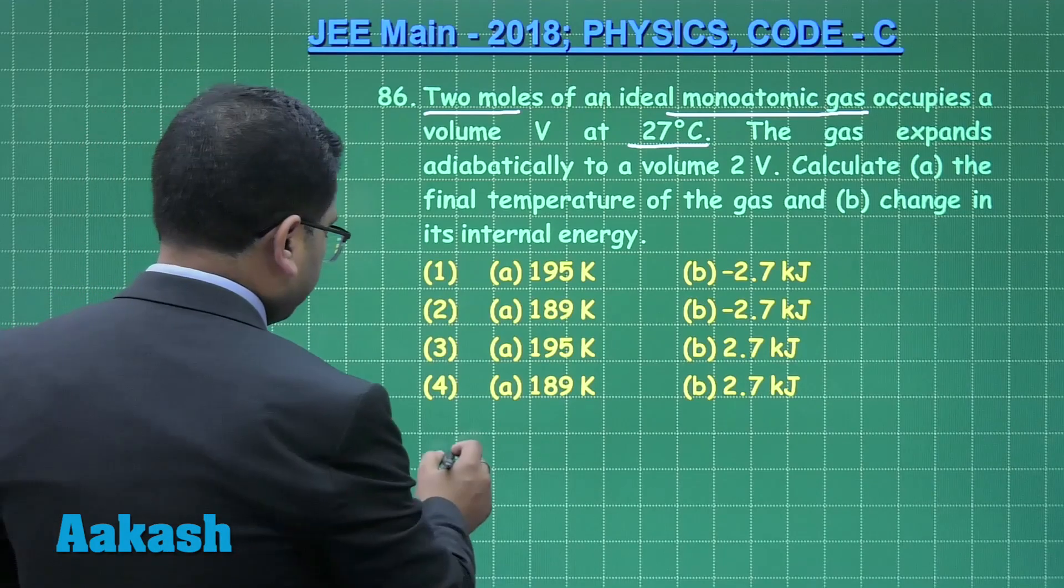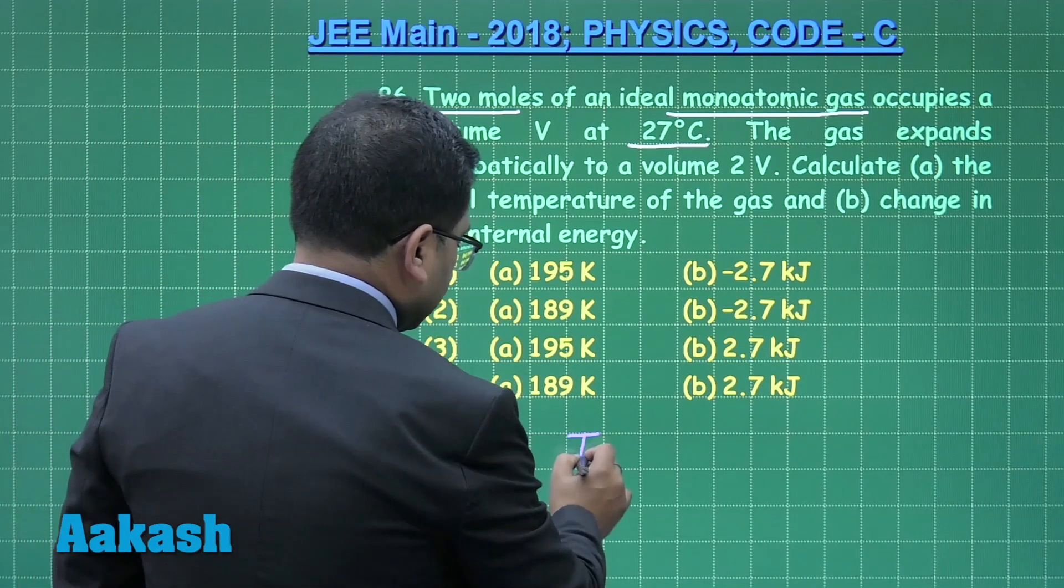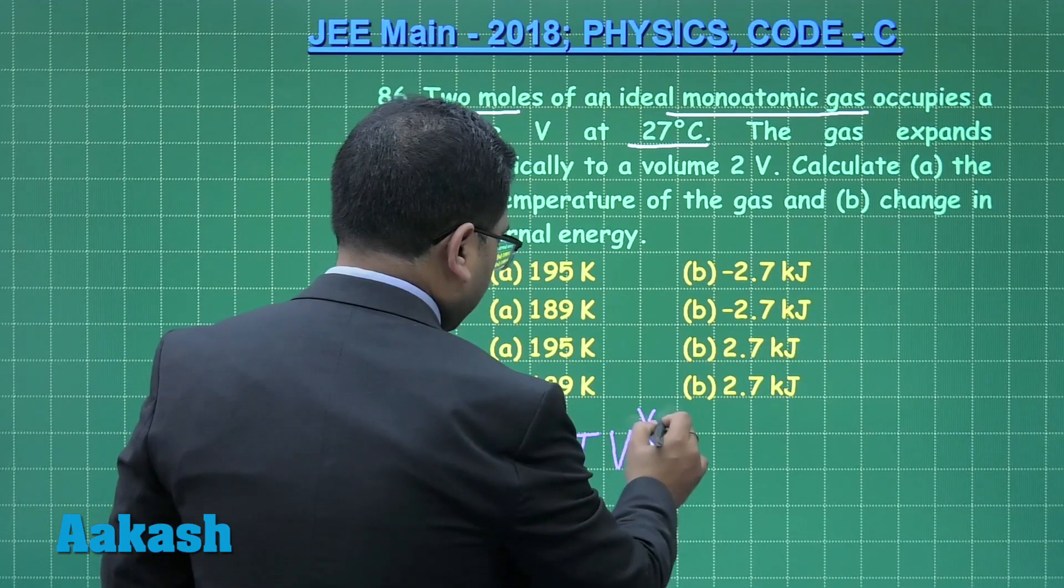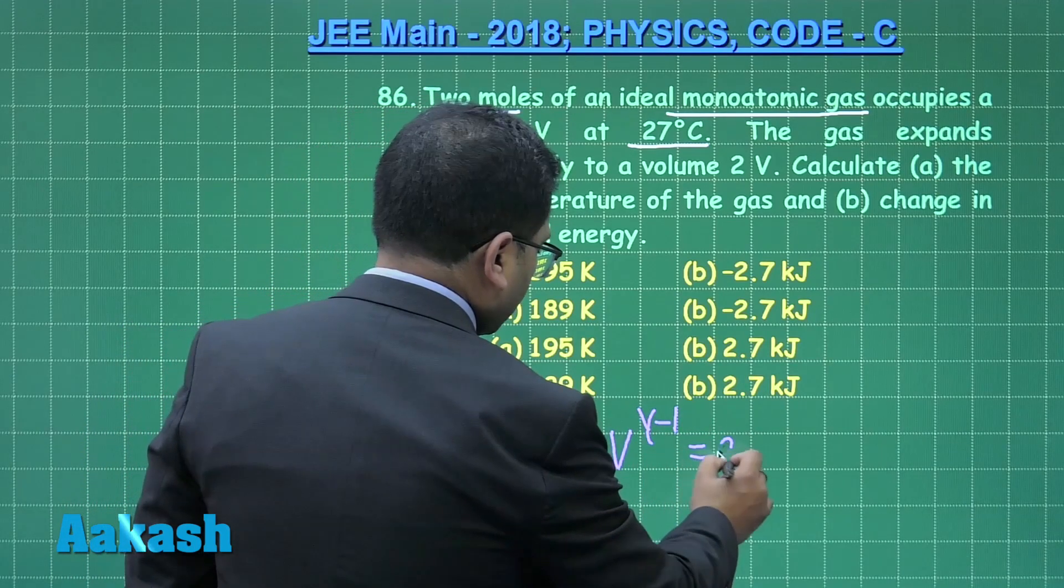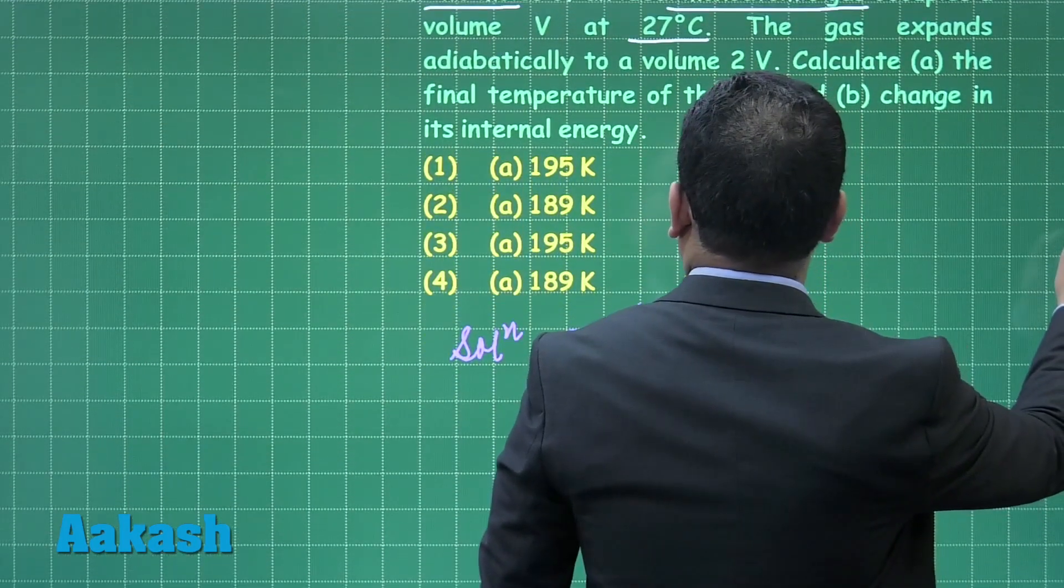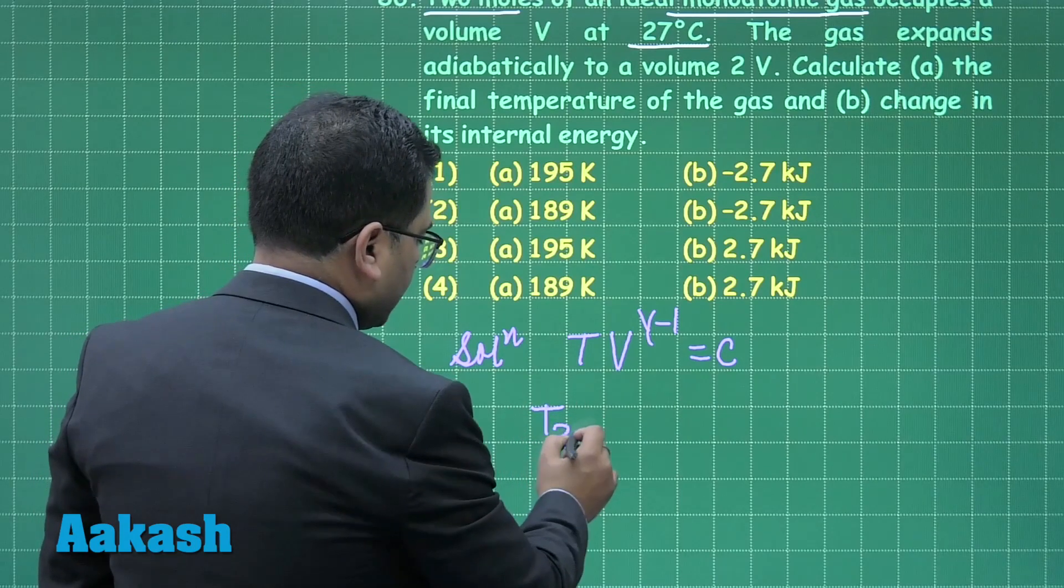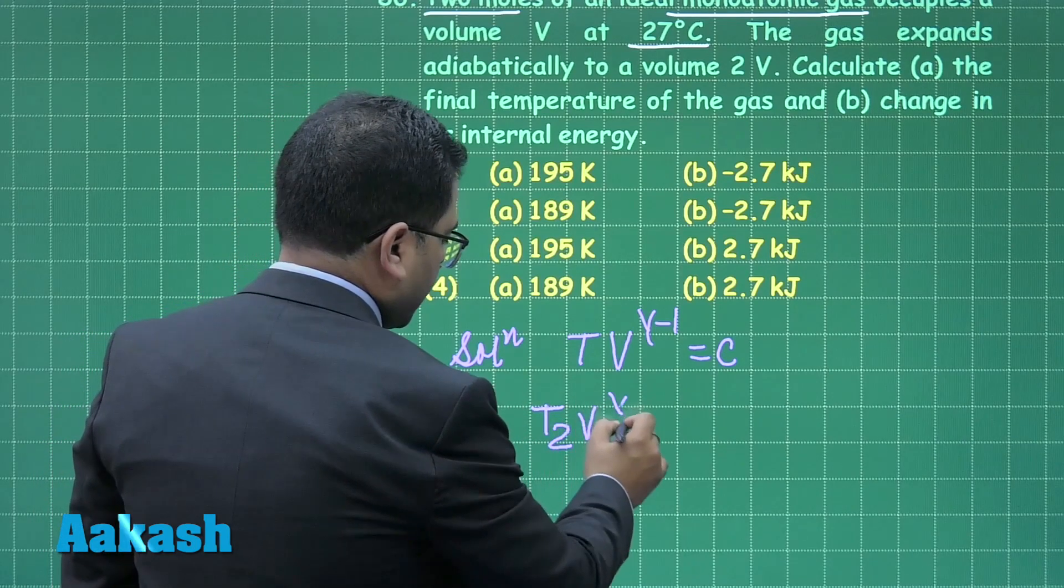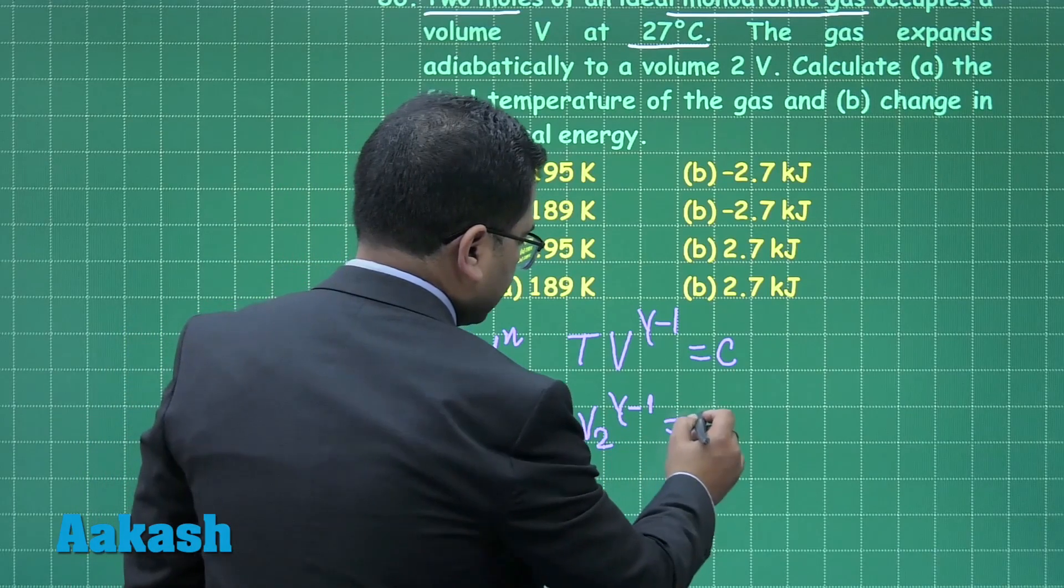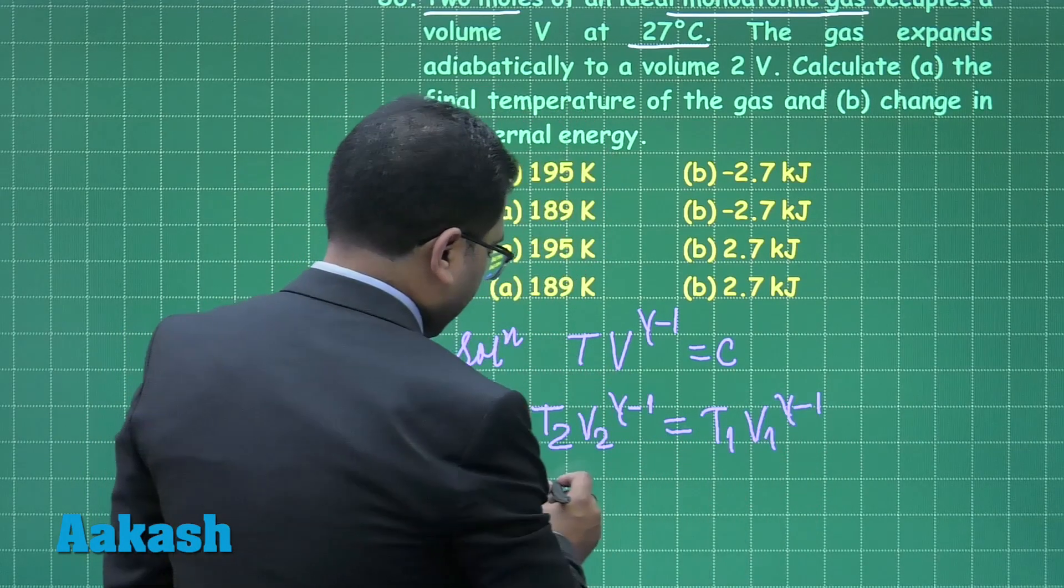Okay, so let us just try to see the solution. The solution part is going to be straightforward. T V to the gamma minus 1 is constant. That is how the temperature and volume are related. Now it is straightforward: T_2 V_2 to the gamma minus 1 is T_1 V_1 to the gamma minus 1.